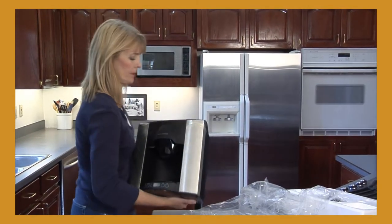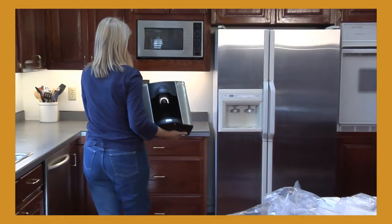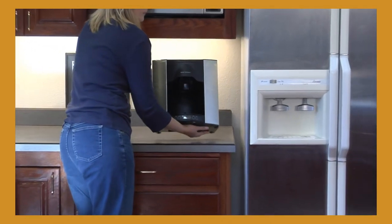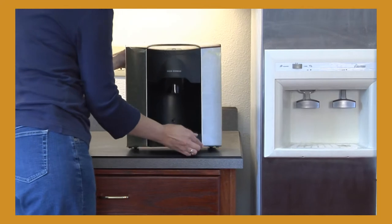Method 1 starts with simply placing the BrewExpress on the counter next to your refrigerator and power outlet. Turn off the water supply, typically located under the sink.